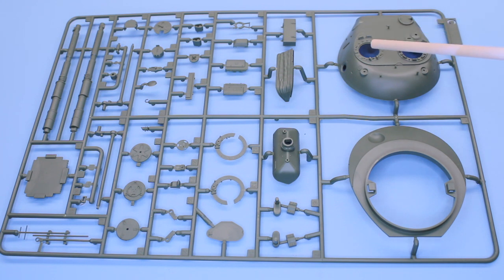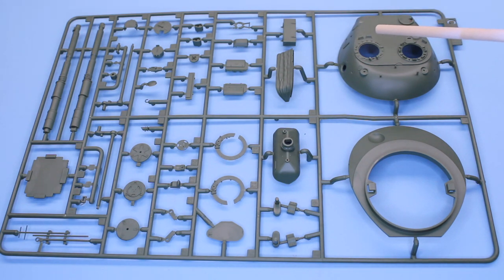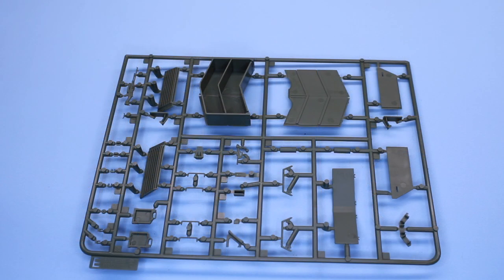The nice thing about the turret is the weld lines are pretty accurate looking and comparing this to an actual real leopard. They look real sharp. Also, your loading hatch here, you can make that open or close. That's a real nice aspect. Unfortunately, with this kit, you're going to have an armor there, but if you look down, you're going to see the hatch there.